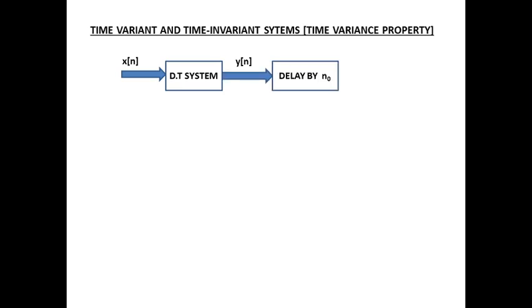The third type of system we are going to discuss is the time variant and time invariant system, and the property is called the time variance property. For a discrete time system, you give an input x(n) and get an output y(n). If you delay it by n-naught times, you get the output as y(n − n₀).